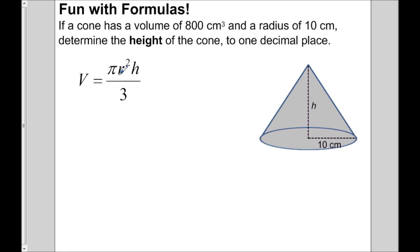Before, we used formulas for volume just to find volume, but now let's say a cone has a volume of 800 cubic centimeters and a radius of 10 centimeters — determine the height of the cone to one decimal place. We're going to use the formula for the volume of a cone, but we'll substitute the given values and isolate using a balanced approach.